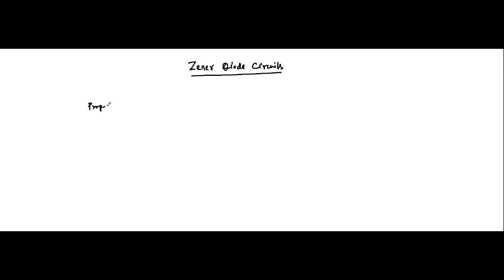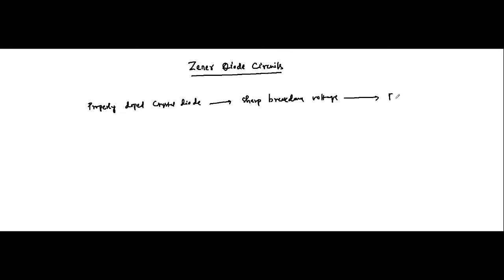We have already discussed the basic concepts related to Zener diode. We know that the Zener diode is a properly doped crystal diode which has a sharp breakdown voltage, and it is always connected in reverse bias mode.